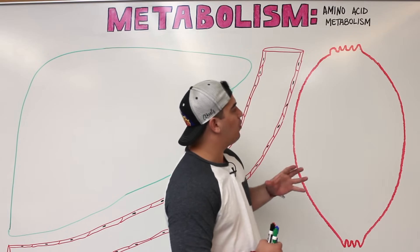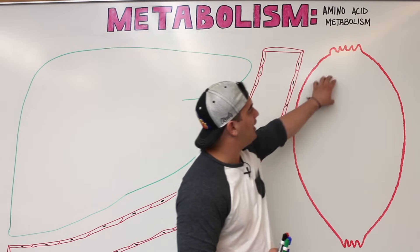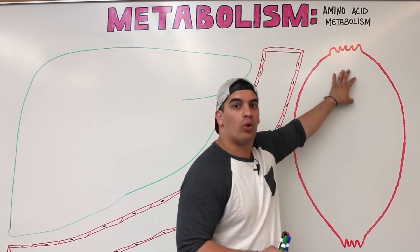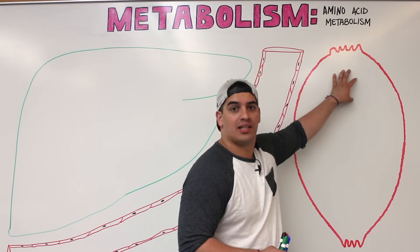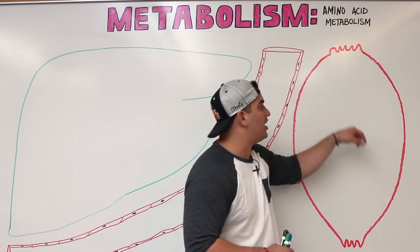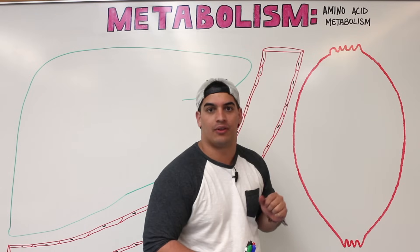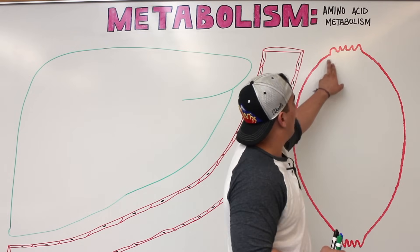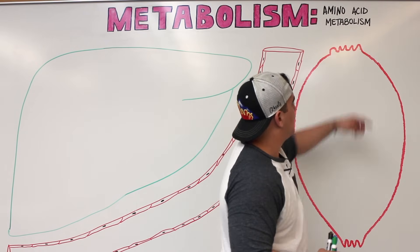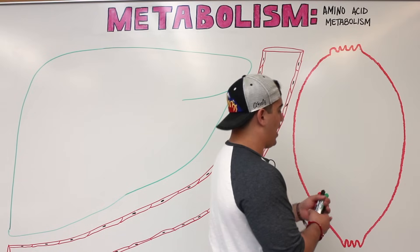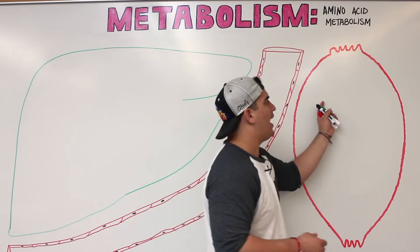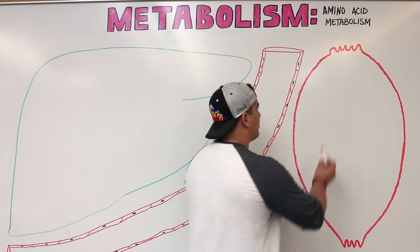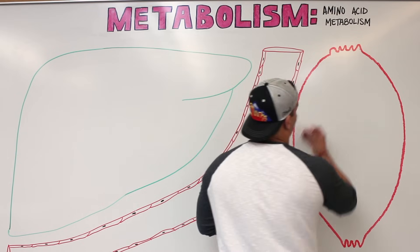We're going to take some amino acids that are going to be in the muscle, undergo a transamination process, and then we're going to see what happens afterwards in the liver. There's going to be a lot of different amino acids found within our actual muscle, because you need amino acids for protein synthesis.